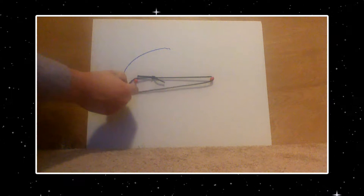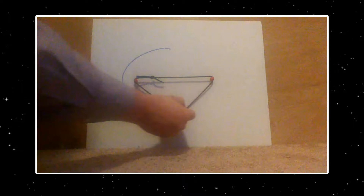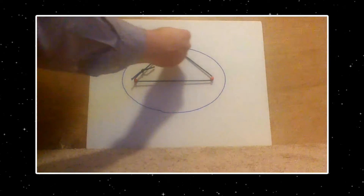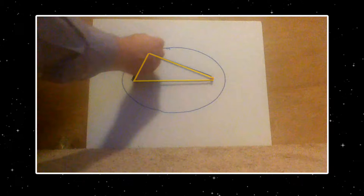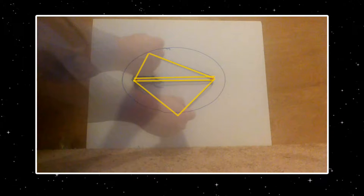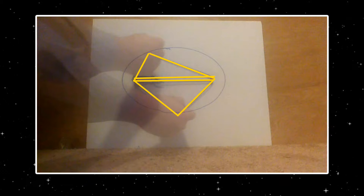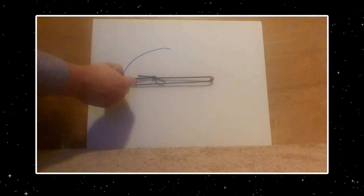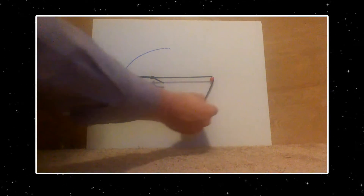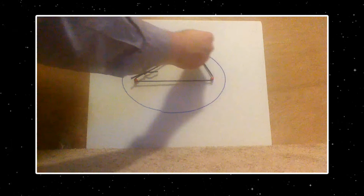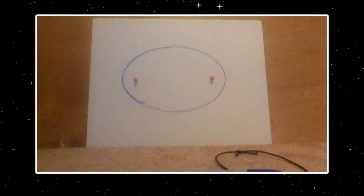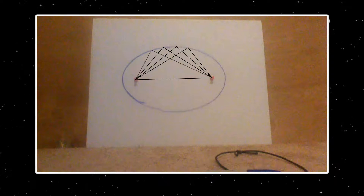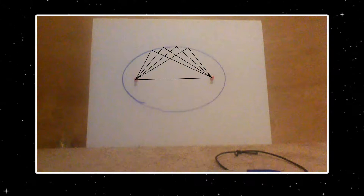Notice that the shape defined by the string connected to the two pins and the pin is a triangle. As the pin moves around the ellipse, the string continues to make different triangles. However, each of these triangles has something in common: the length of the string. Although these triangles have different shapes, the total length, or perimeter, of the sides is the same. This demonstrates how, mathematically, an ellipse can be described as connected points at one of the corners of a continuous series of triangles with a constant perimeter, such that two corners are fixed at the foci.